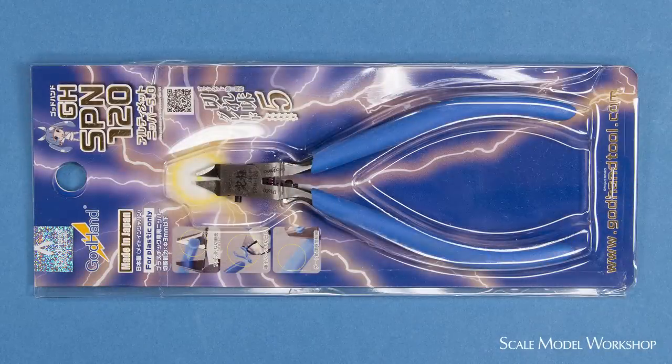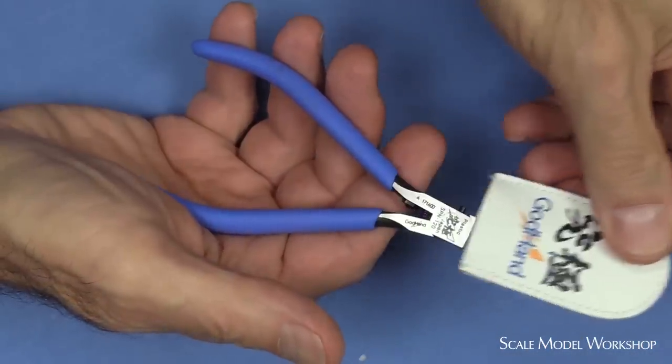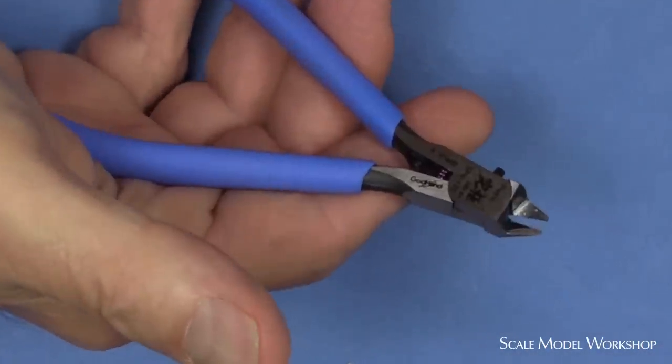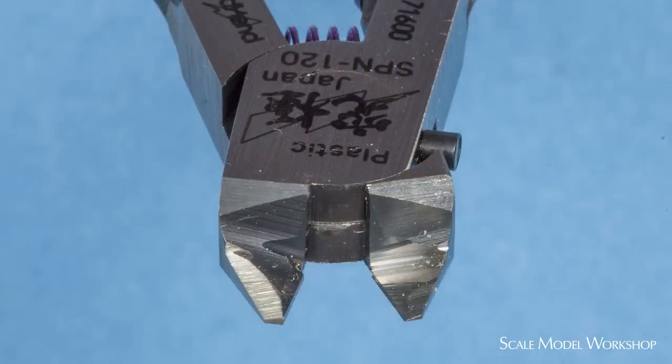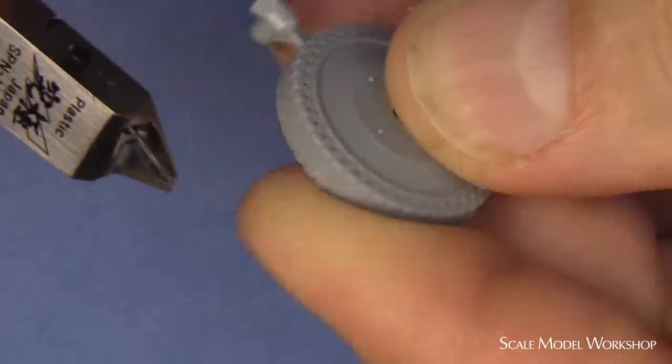The God Hand SPN-120 has sort of become a legend. It's the sharpest of the bunch. It uses a single-edge design and an extremely thin, sharp cutting jaw. Depending on the plastic, it can leave a very smooth cut.